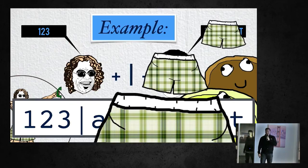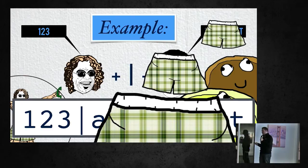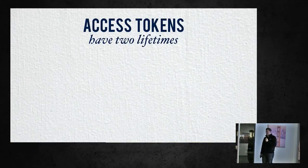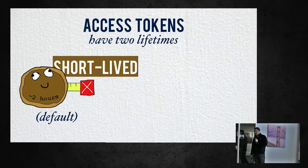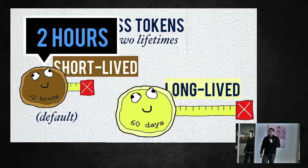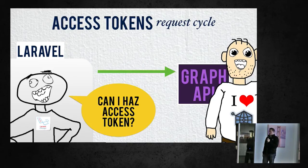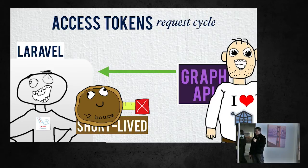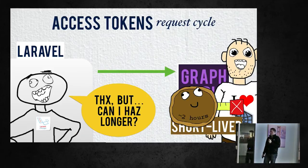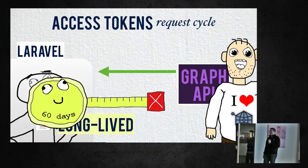The user and page access tokens have to be obtained from Graph. The user token is obtained by OAuth, and the page token is obtained by accessing the admin of that page. An app access token is generated by concatenating the app ID, a pipe character, and the app secret. Be warned — this exposes your app secret, so don't use app access tokens in links you send to users. Access tokens have two lifetimes: short-lived (two hours) and long-lived (60 days). By default, Graph returns a short-lived token, but you can easily exchange it for a long-lived one.